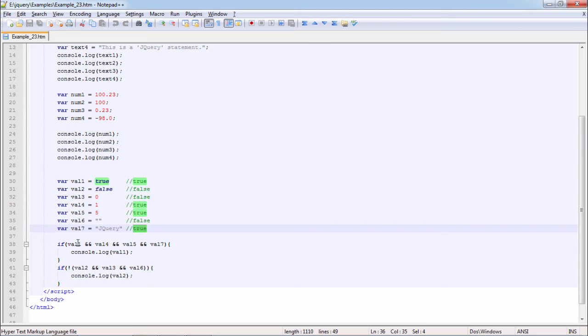So we have val1 true, val4 true, val5 true, val7 true. Console.log will print val1 as true. Next, val2 is false, val3 is false, val6 is false, so negating it will give true. Val2 it will print as false.